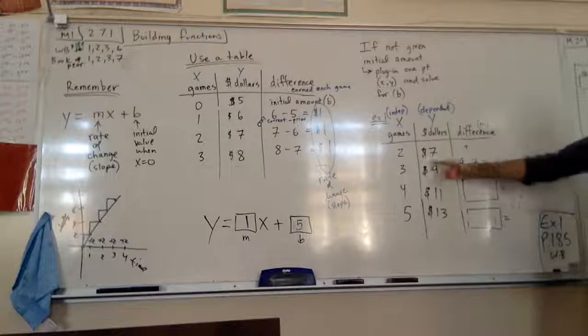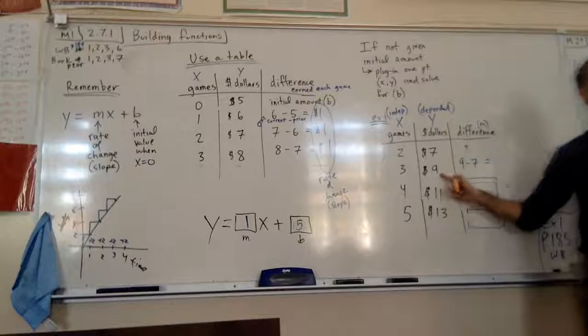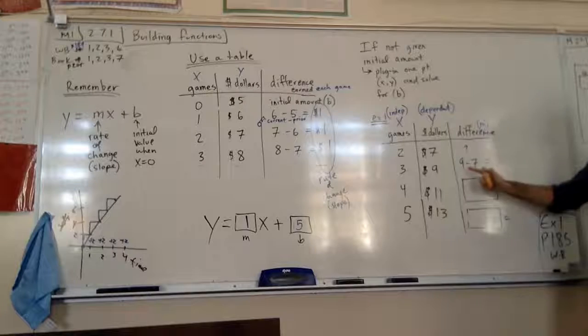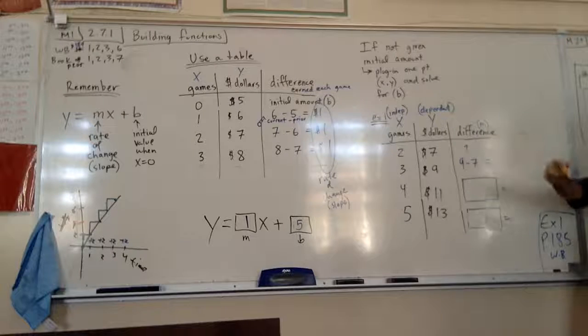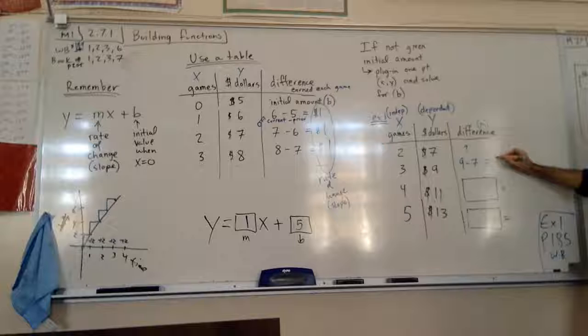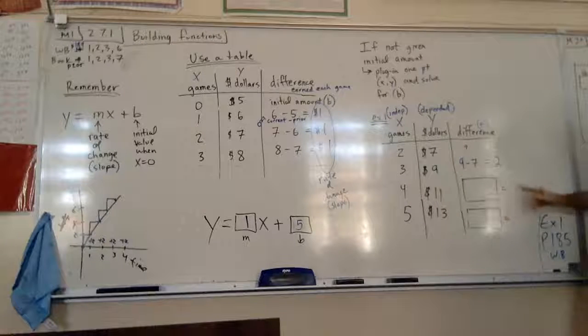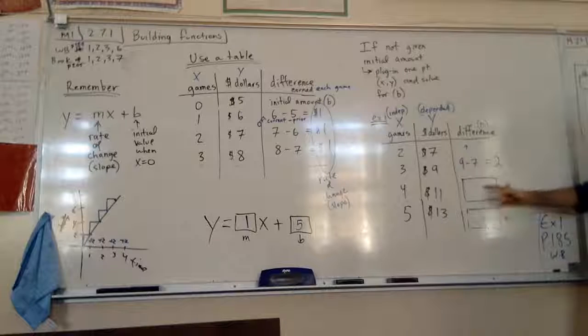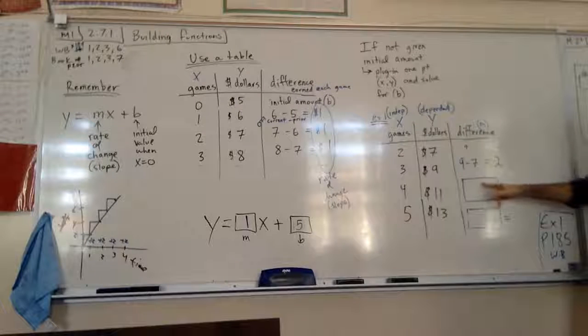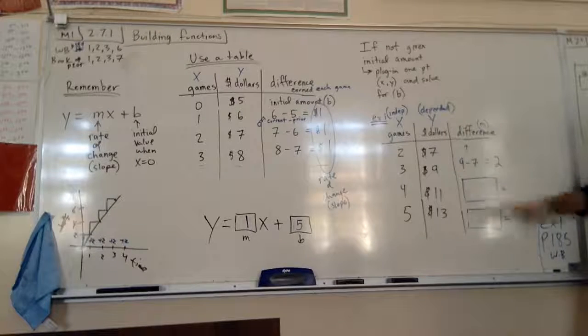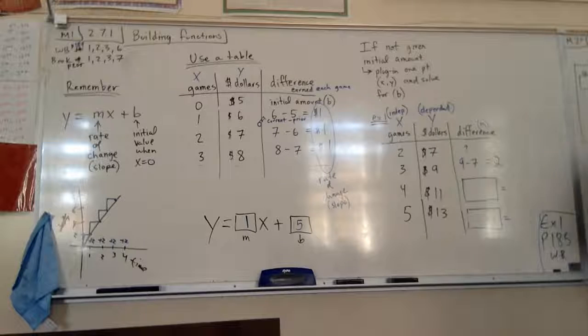So, the difference, how could we find the difference if we only have information about game two? We don't know what happened in game one. If you're not able to conclude it that way, we would just leave that as a question mark for now. But this we can figure out. After game three, you have nine bucks. After game two, you had seven. So, nine minus seven. What do we have? Two.